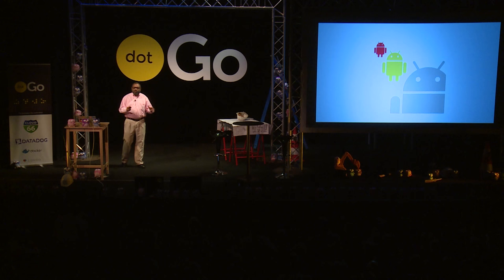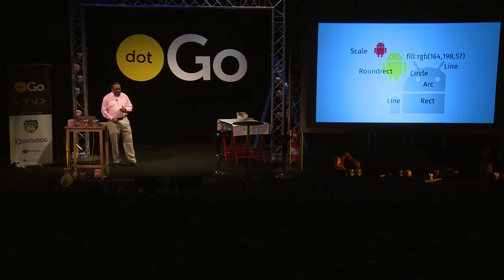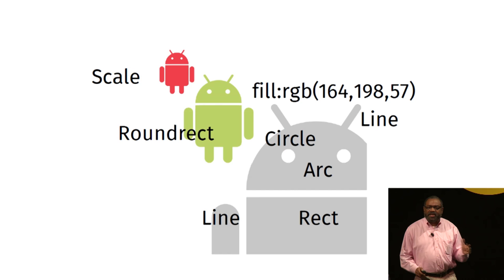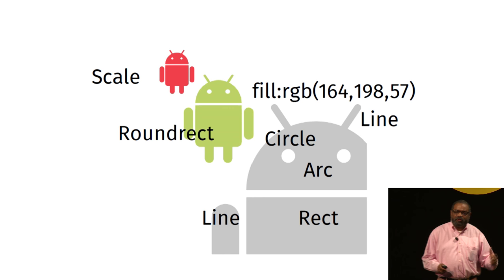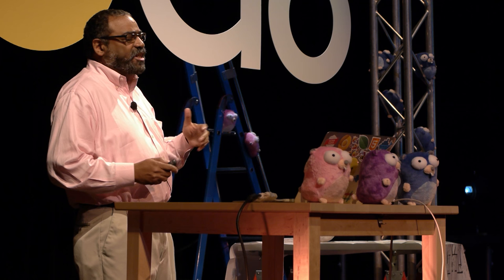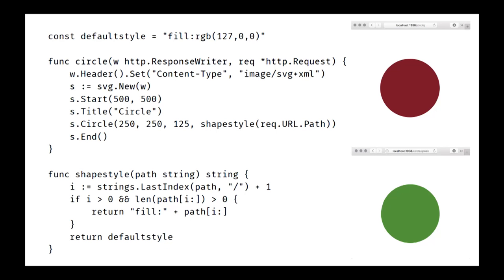This is Bug Droid — the cute Android mascot. But when I see Bug Droid, I see what he's made up of: lines, rectangles, arcs, and circles with different colors that you can scale. Once you have this idea in your head that you can program graphical elements, you've got superpowers. Anything you can do with something like Adobe Illustrator, now you can program — using the full power of the language.